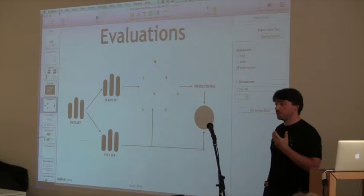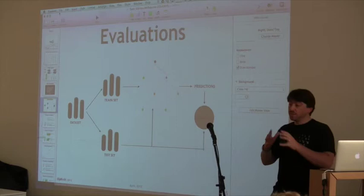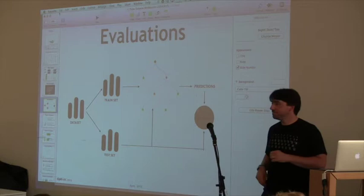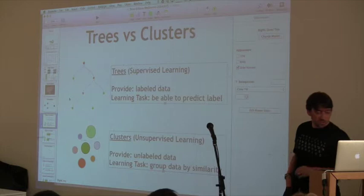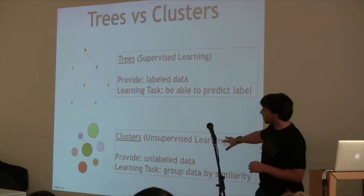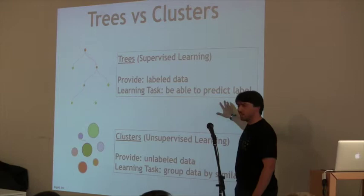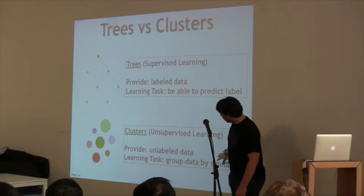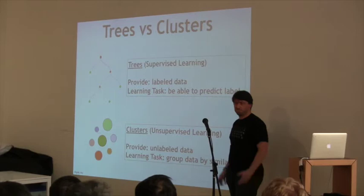So far, this has all been supervised predictive analytics — we're taking labeled datasets and building a model that predicts a known value. What's the difference with unsupervised learning? One particular type of unsupervised learning is clustering. In the supervised case, you're providing labeled data and trying to predict the label. In the unsupervised case, you start with unlabeled data and your learning task is to find patterns that make the data points look similar — to group them together.